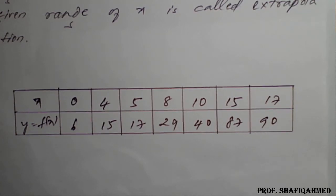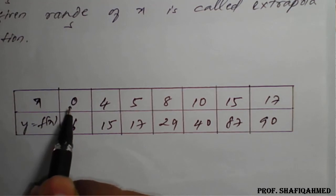So, what is interpolation? This is the boundary for x. So, x varies from 0 to 17.